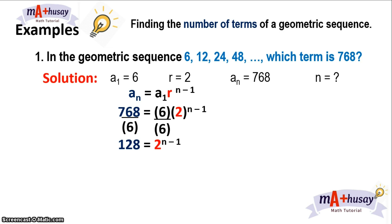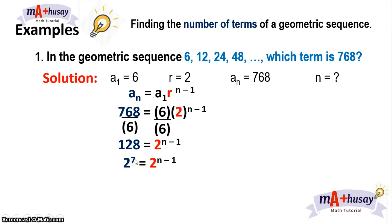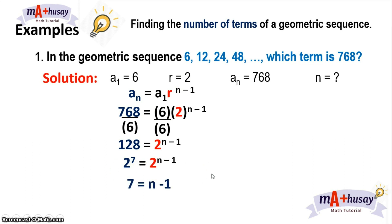How are we going to solve for n? To solve for n, we have to rewrite 128 in exponential form, making sure that the base of 128 is 2. So, 128 can be written as 2 raised to 7, because 2 times 2 times 2 times 2 times 2 times 2, 7 times, will give you 128. Now we have the same bases, so we can get the exponent. So, 7 equals n minus 1.